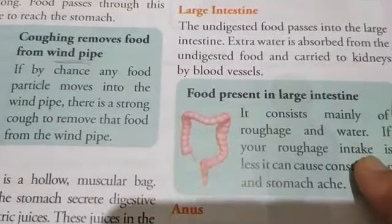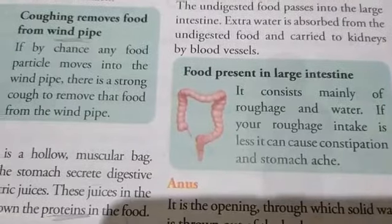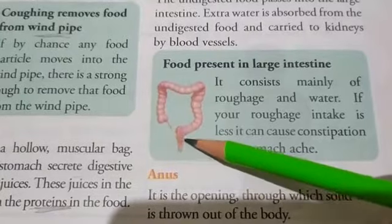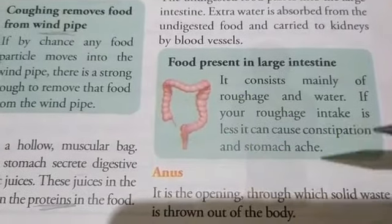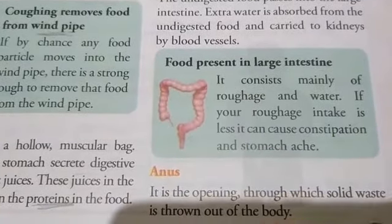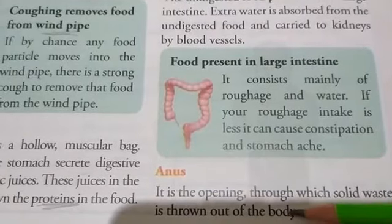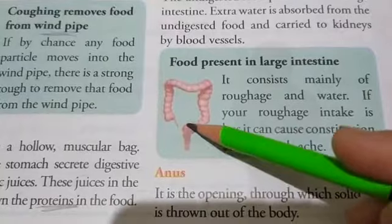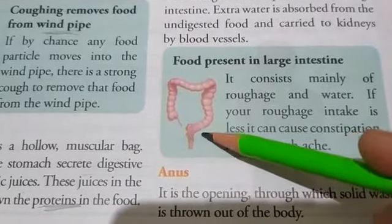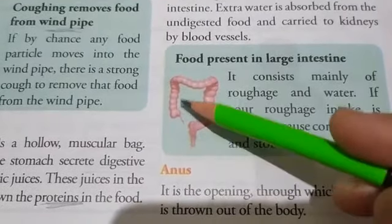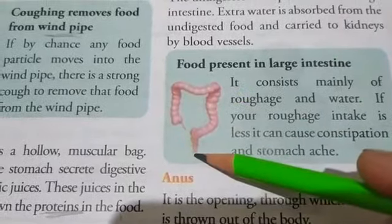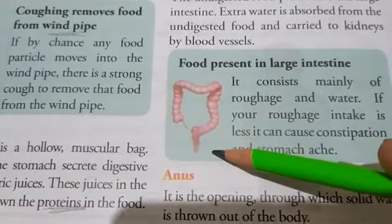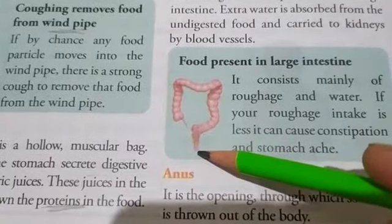Next one is the anus. Anus is the opening at the end of the large intestine through which solid waste is thrown out of the body. There is a 12 cm long tube known as the rectum, and after that, at the end of the large intestine, there is the anus — a small opening through which solid waste is thrown out of the body.